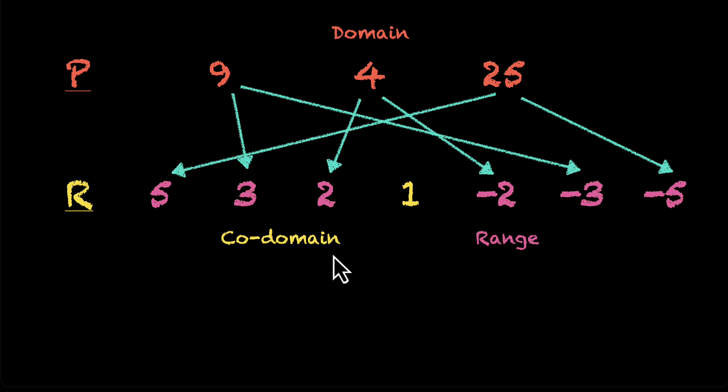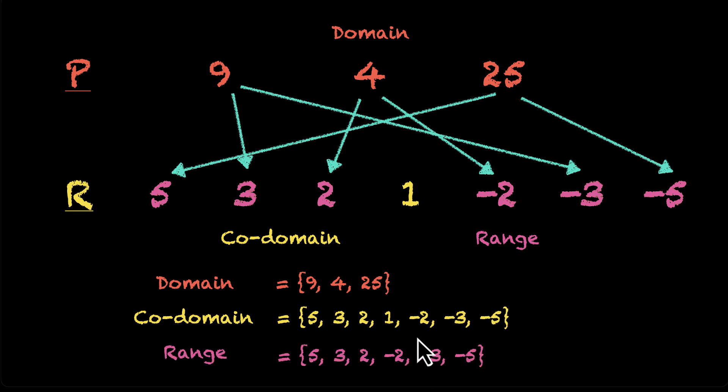So now we know the domain, the co-domain, and the range. Let's write that down. The domain is 9, 4, 25. Co-domain is 5, 3, 2, 1, minus 2, minus 3, minus 5. Basically the entire set. And range is all of this except the element 1. So that's our domain, co-domain, range. We're mostly there.